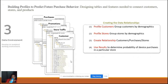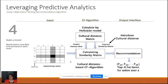To build profiles predicting future purchase behavior, we profiled customers and grouped them by demographics, built out store information, created a relationship between customers, purchases, and stores, and built out results to determine the probability of device purchases at a particular store. Purchases, promotions, and store traffic were all factored in.